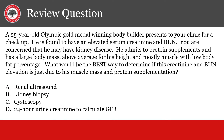A 25-year-old Olympic gold medal winning bodybuilder presents to your clinic for a checkup. He is found to have an elevated serum creatinine and BUN. You are concerned that he may have kidney disease. He admits to protein supplements and has a large body mass with high muscle and low body fat percentage. What would be the best way to determine if his creatinine and BUN elevation is just due to his muscle mass and protein supplementation? The answer is a 24-hour urine creatinine collection to get the creatinine clearance and calculate GFR. This would show that the elevated serum creatinine was a false positive for kidney disease.